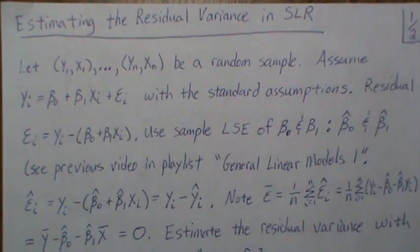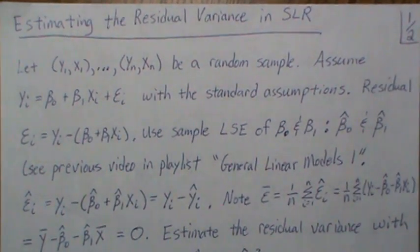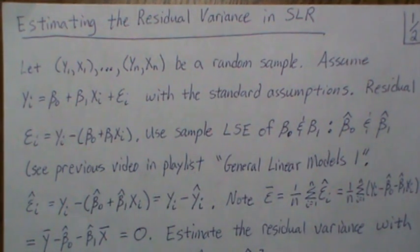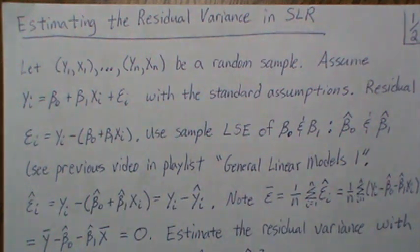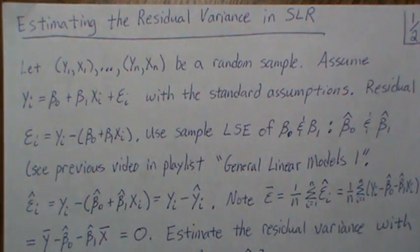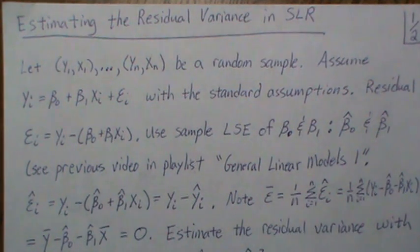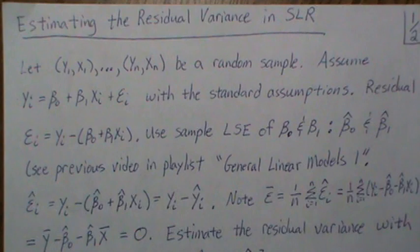In this video we're going to estimate the residual variance in simple linear regression. The residual variance is the fluctuation of the data points about the line — the line doesn't fit the data exactly, and the variance of the data relative to the line is called the residual variance. We want to develop a point estimate to describe that variance about the line.